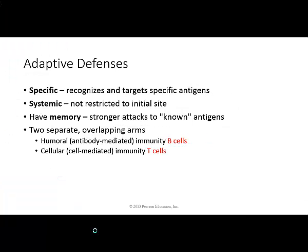There are two arms of the adaptive defense system: T cells and B cells. We have the humoral arm, which results in antibodies being produced, and we have the cellular arm, which involves cell-to-cell communication for protecting us against infection and foreign invaders. T cells are part of cellular immunity, and B cells are part of the humoral or antibody-mediated immunity.